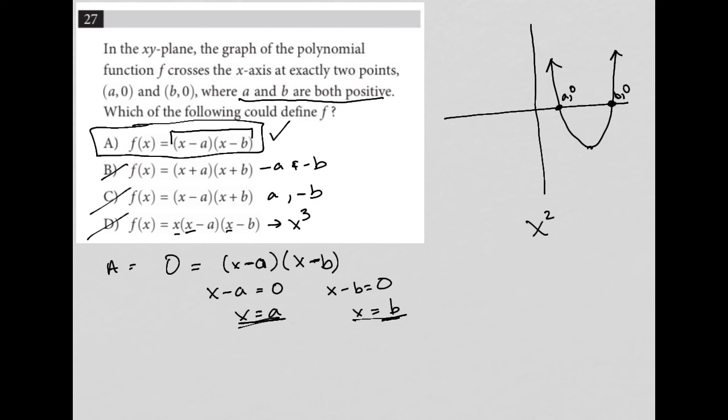And for choice D, while we do get positive A and positive B, we also get a 0 from this x here. So we'd have 0, A, and B. And that would give us three x-intercepts, which we know we do not have.